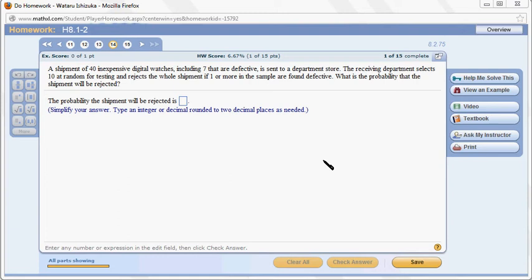There are 40 digital watches, including 7 that are defective. The shipment will be rejected if one or more defective ones are found in 10 watches. So let's find the probability the shipment will be rejected. That means finding the probability of one or more defective watches in 10 watches.